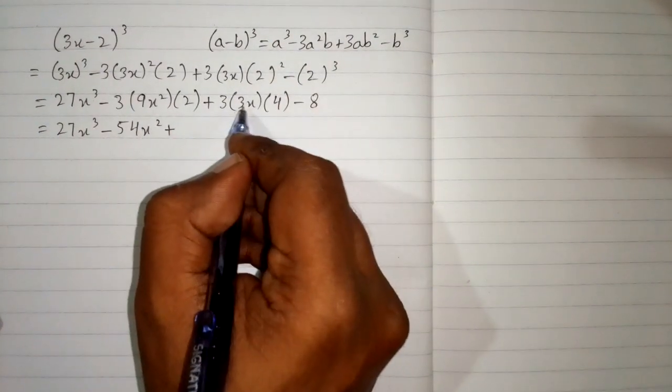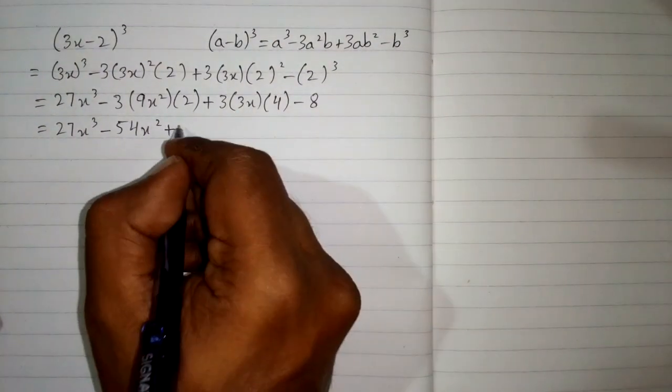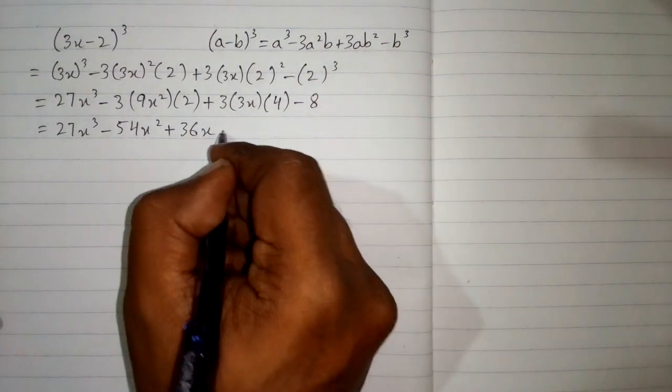Then plus 3 times 3 is 9 and 9 times 4 is 36. So we have 36x minus 8.